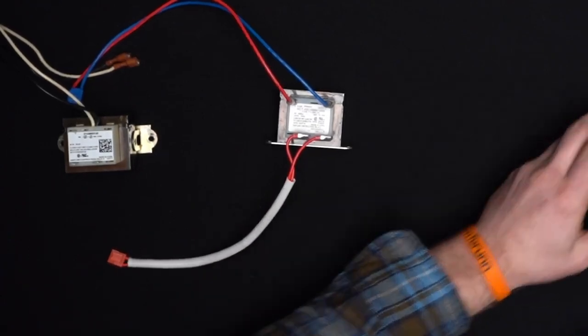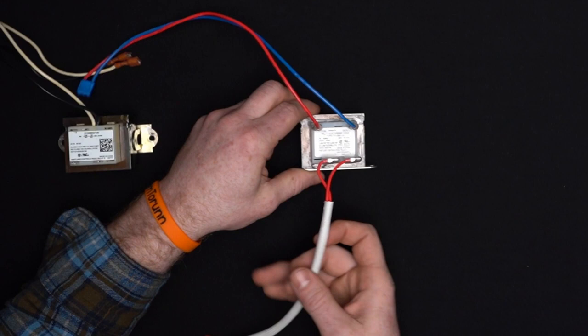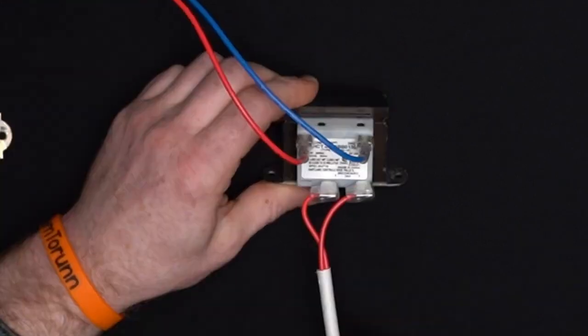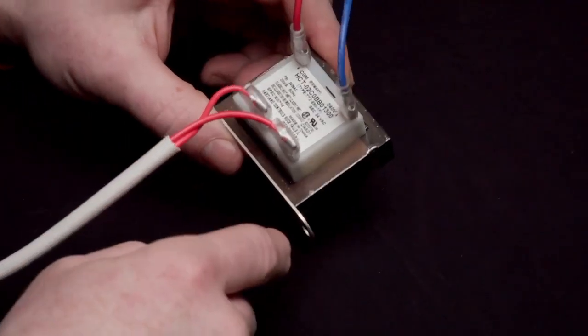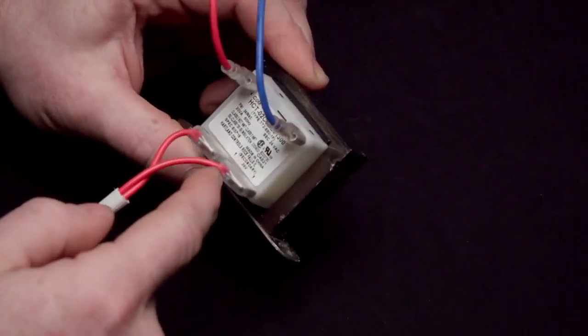So we're going to set that to the side, and now we're going to look at an ACIQ transformer. Now this one, the voltage is going to be different, but you can see on here that it actually says primary and secondary.